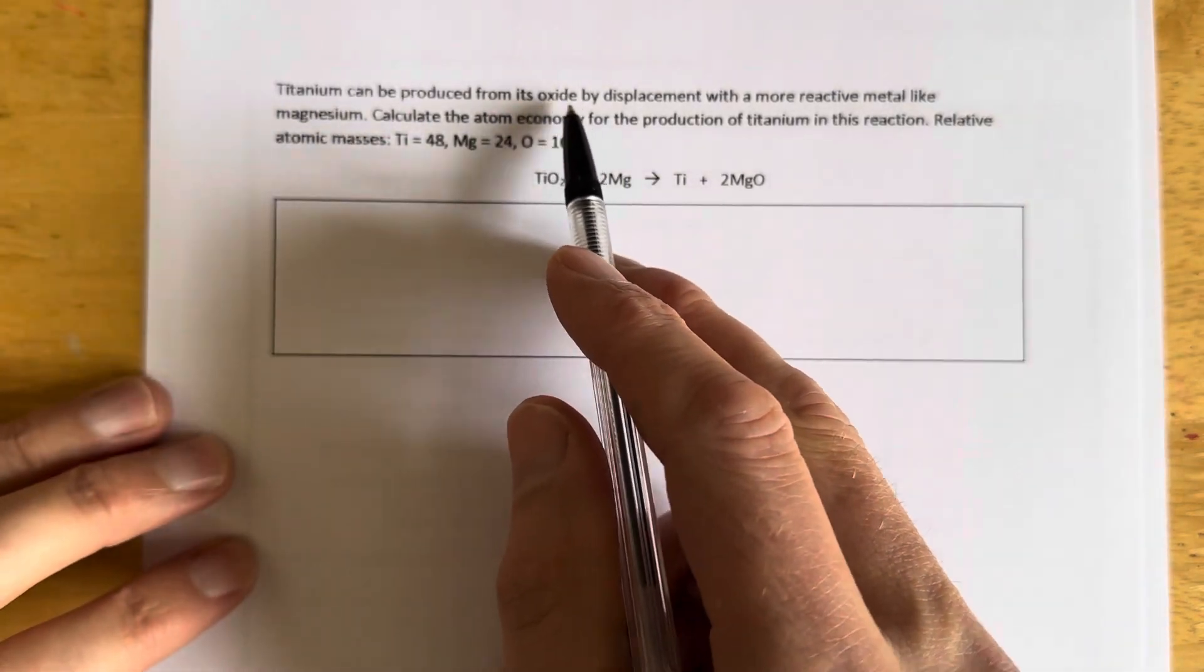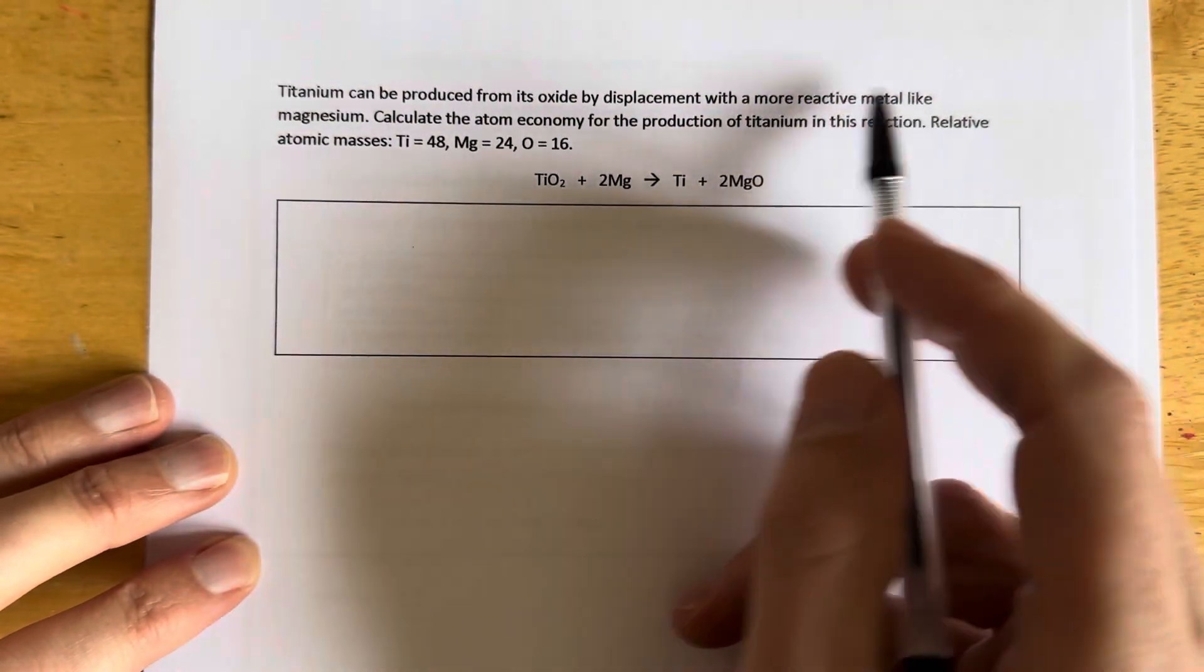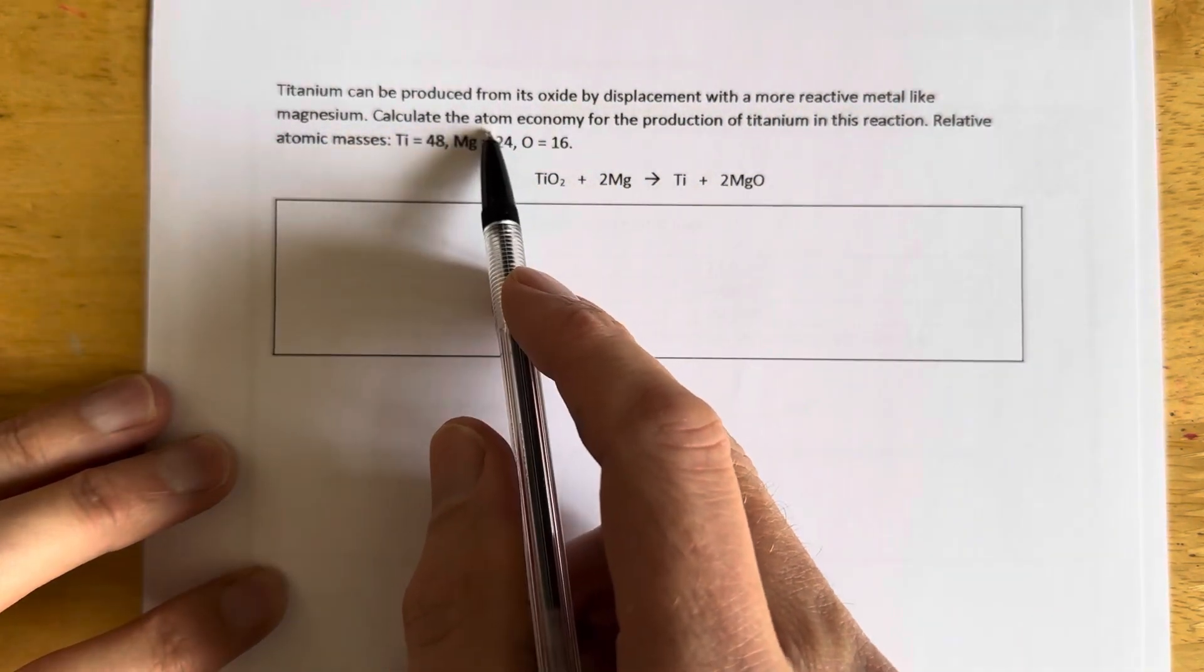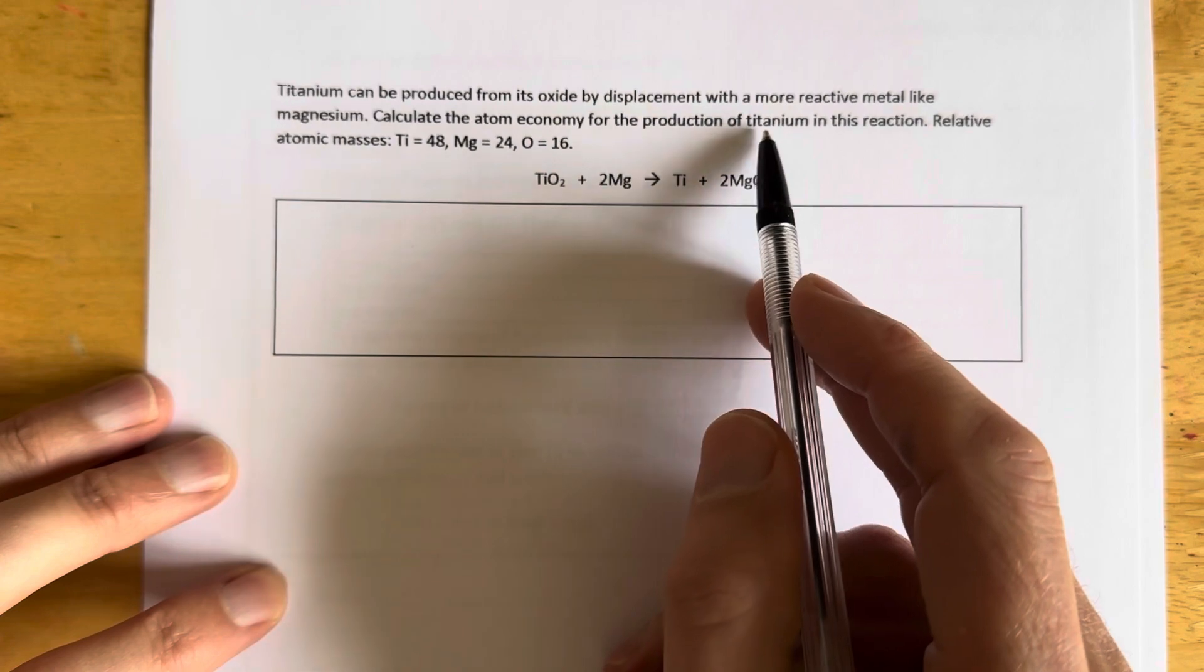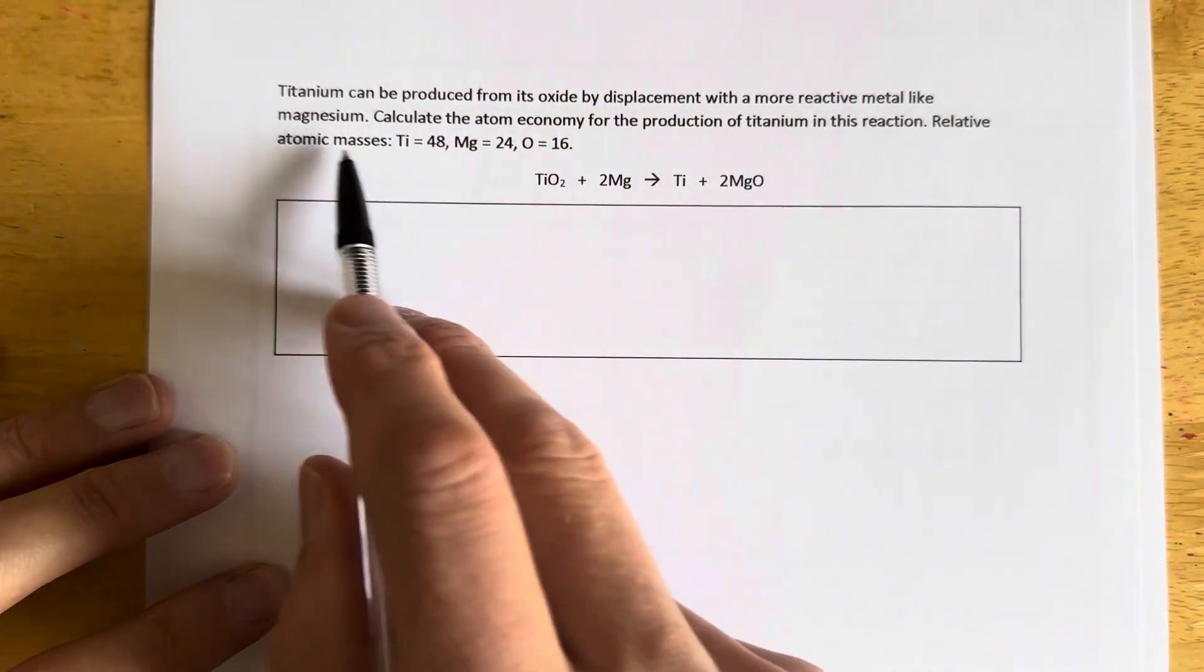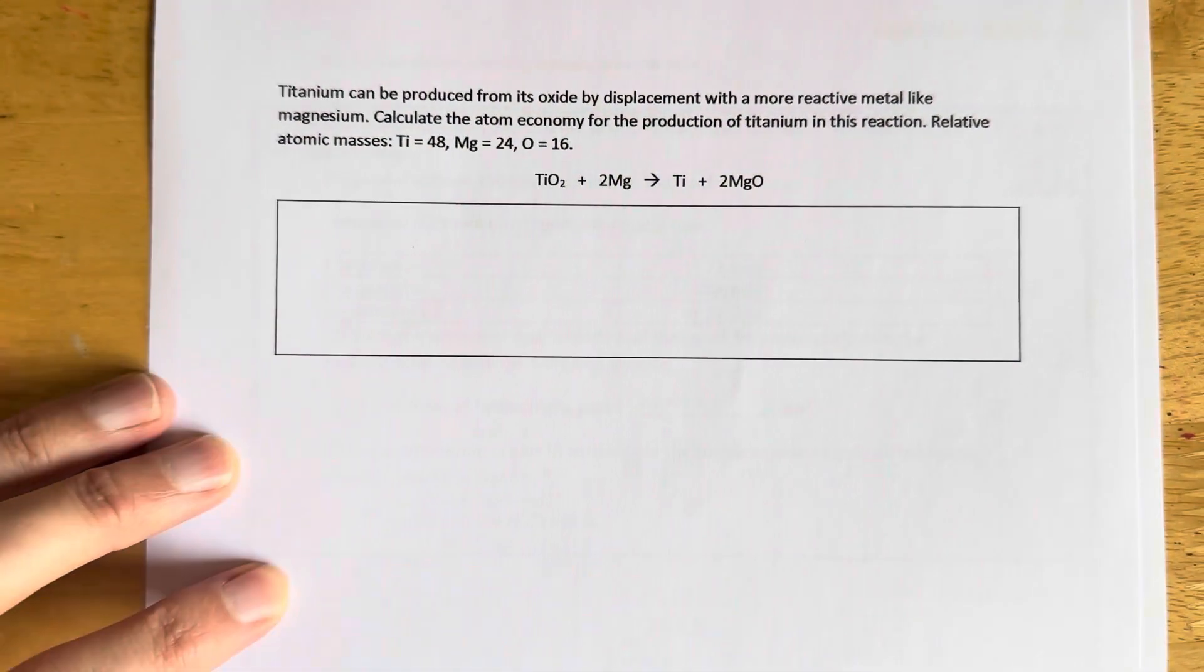Titanium can be produced from its oxide by displacement with a more reactive metal like magnesium. Calculate the atom economy for the production of titanium in this reaction. We've got relative atomic masses of titanium, magnesium and oxygen.